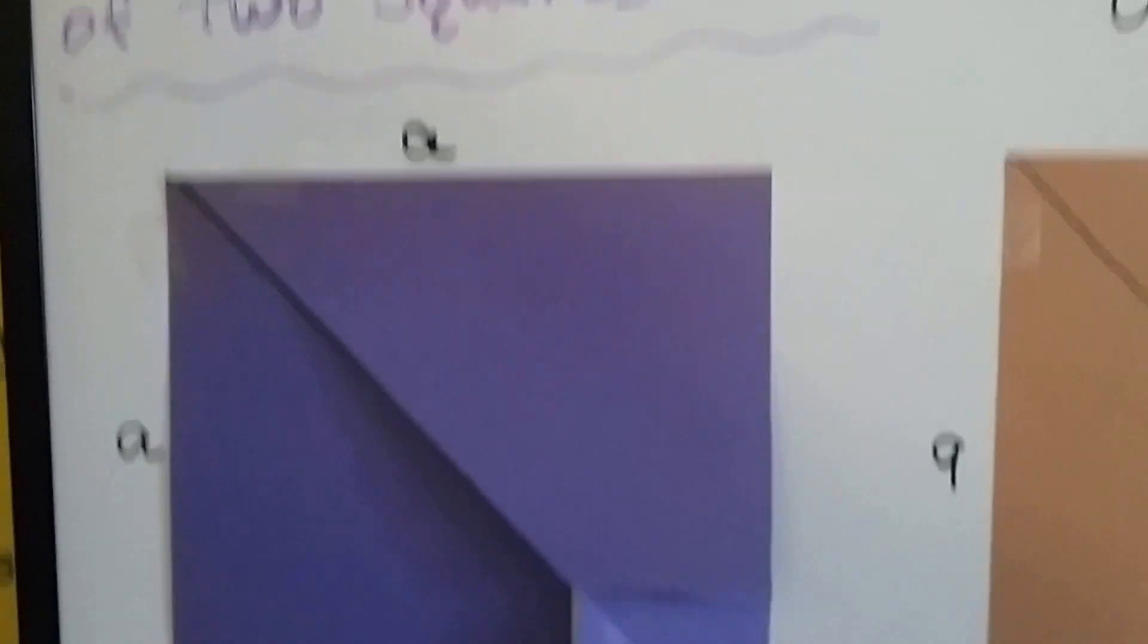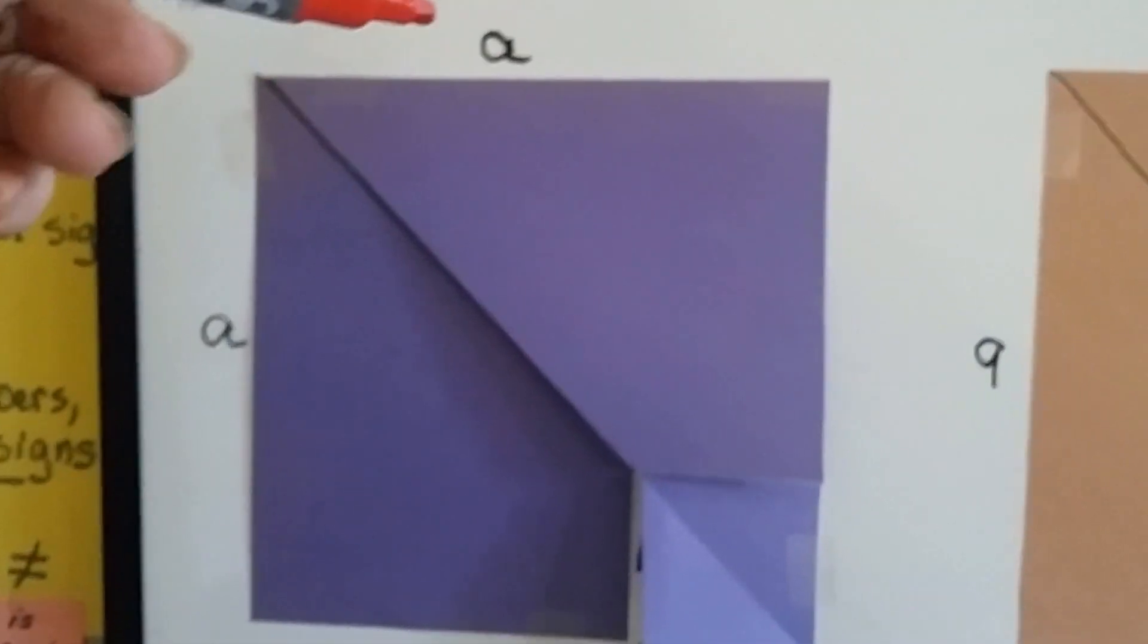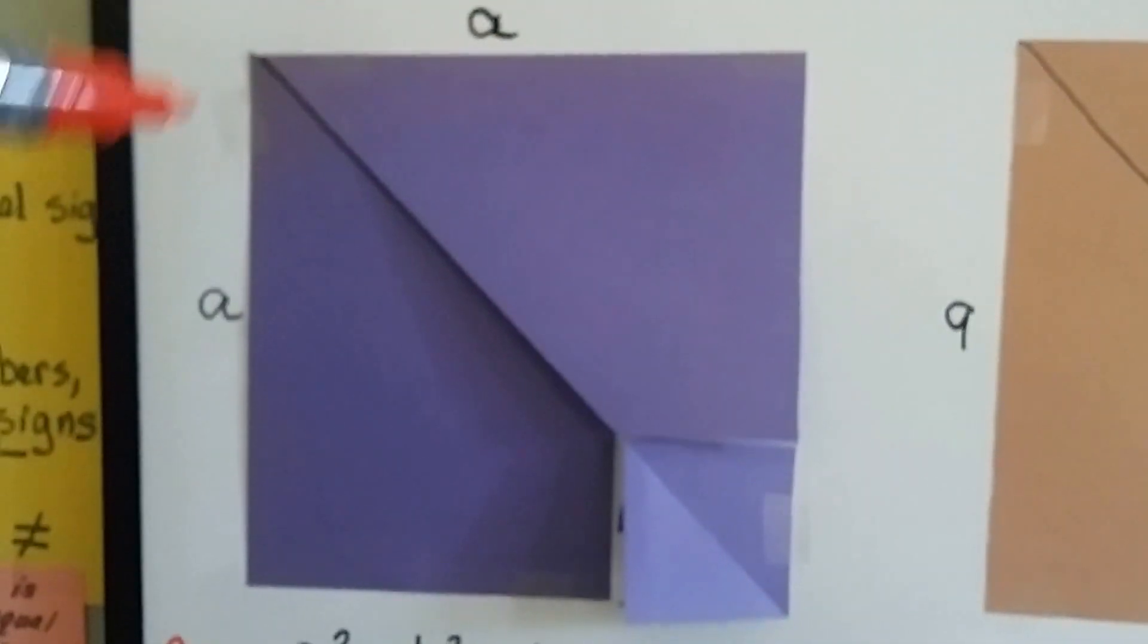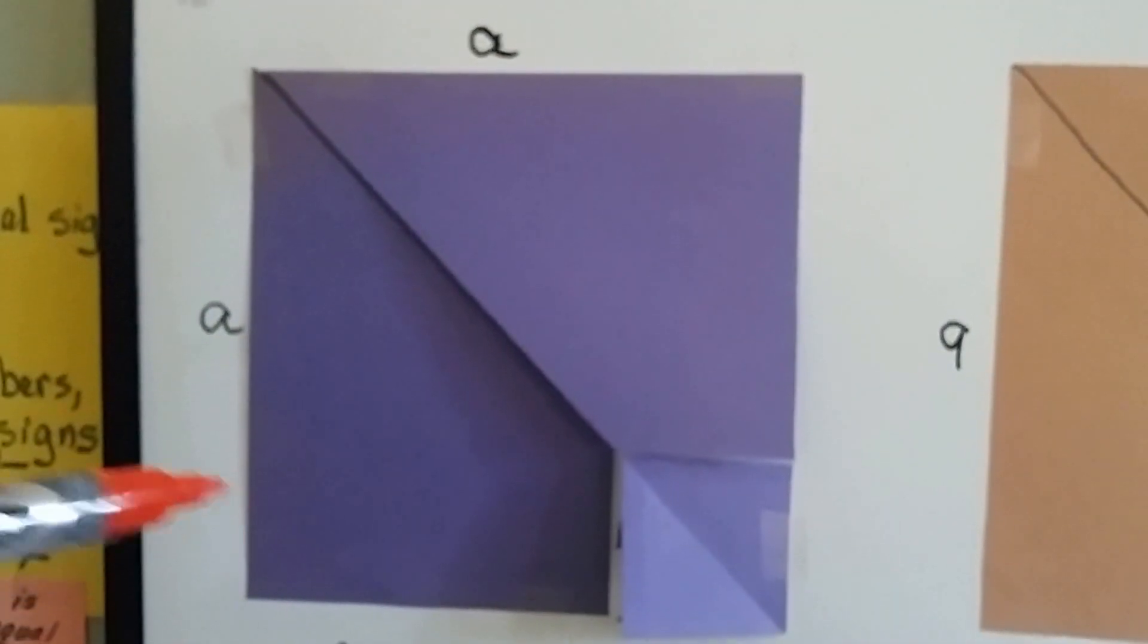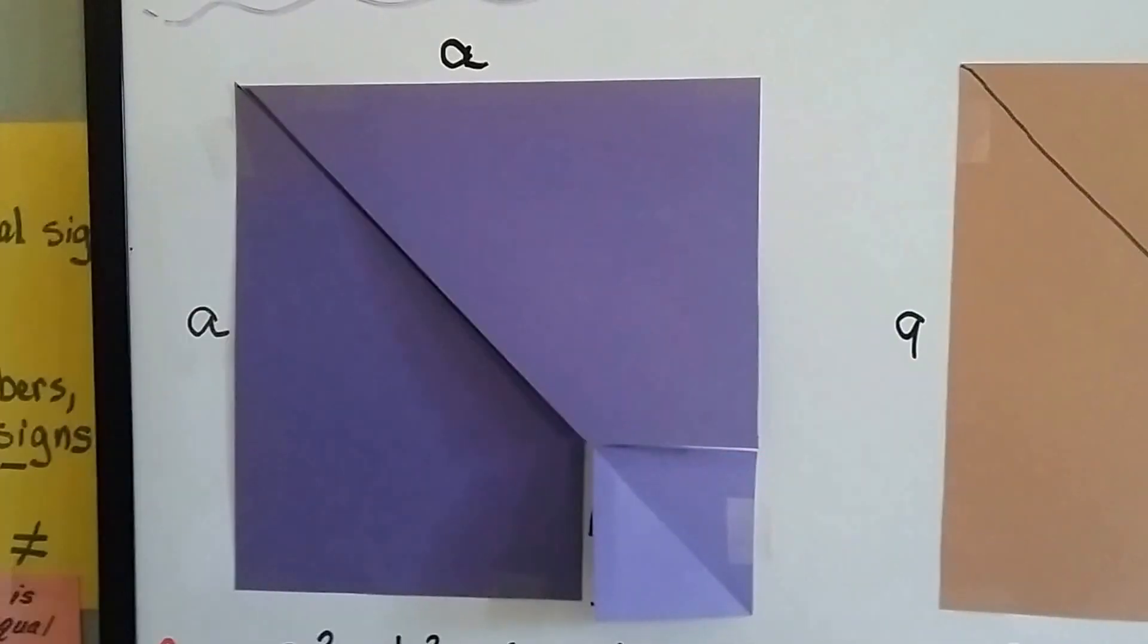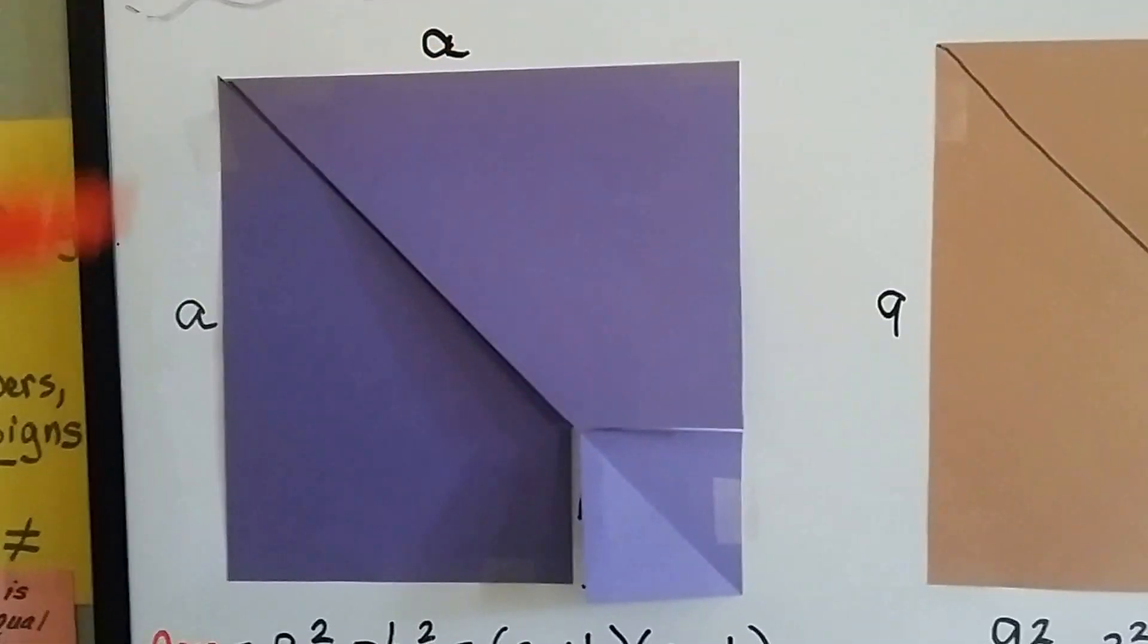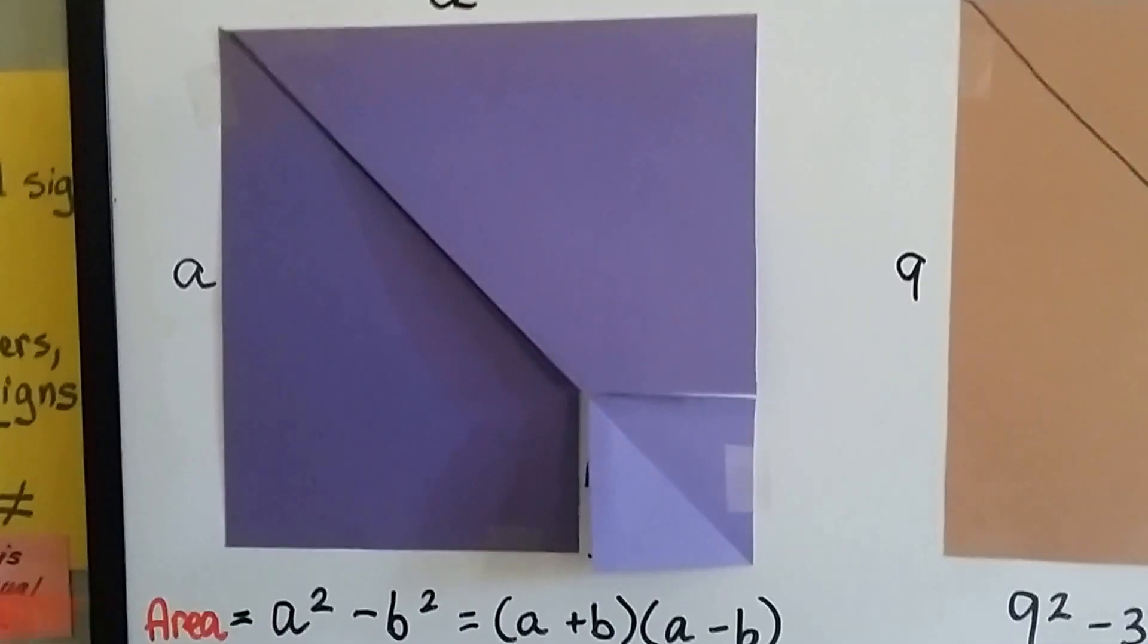So take a look at my blue construction paper square here. We can see that the top side, its length is a, and this side is length a, because it's a square. They've got the same length on each side, all four sides in fact. And to find the area of this entire blue square, we would do a times a. We'd do a squared.